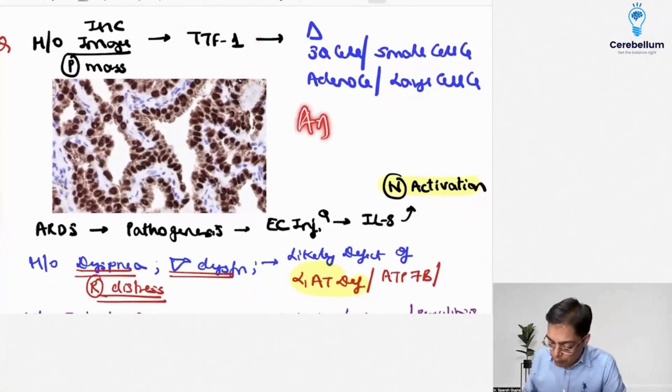We had a discussion when talking about the number 1 cancer globally as well as in our country, that is adenocarcinoma. A is the first alphabet and therefore easy to recall that TTF is going to be expressed in patients having adenocarcinoma of the lung.